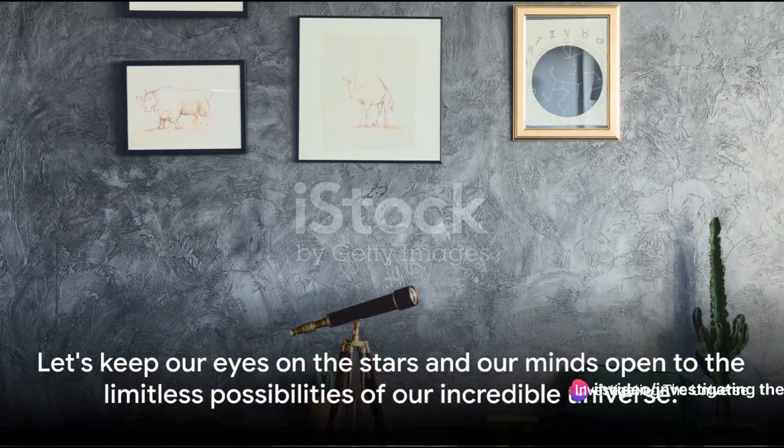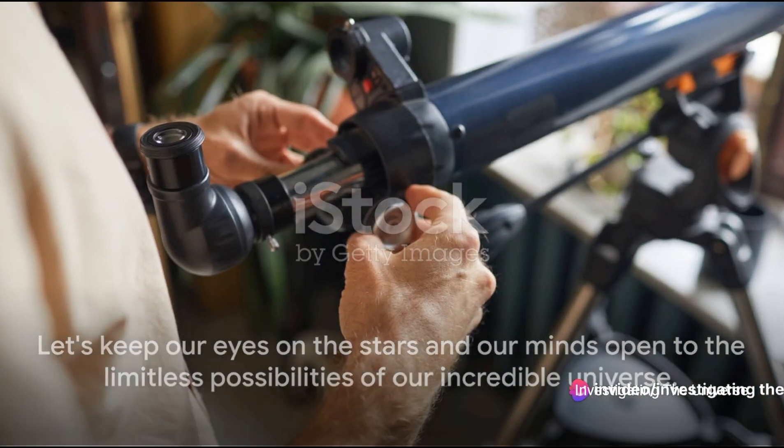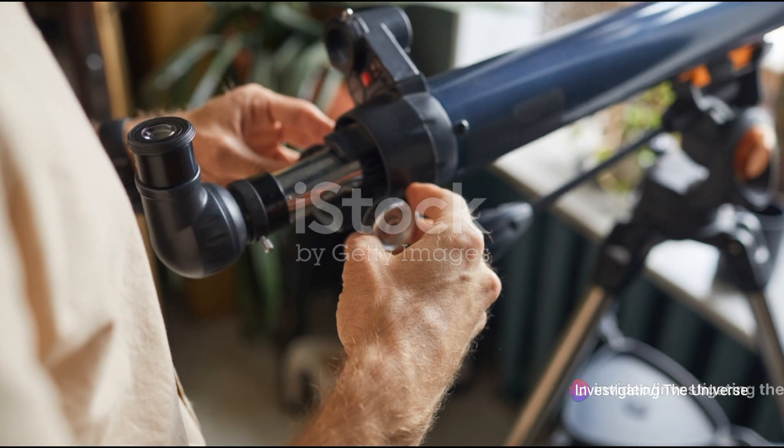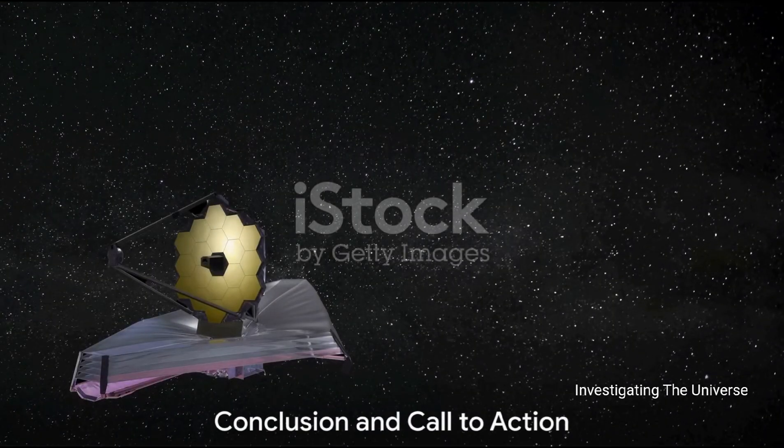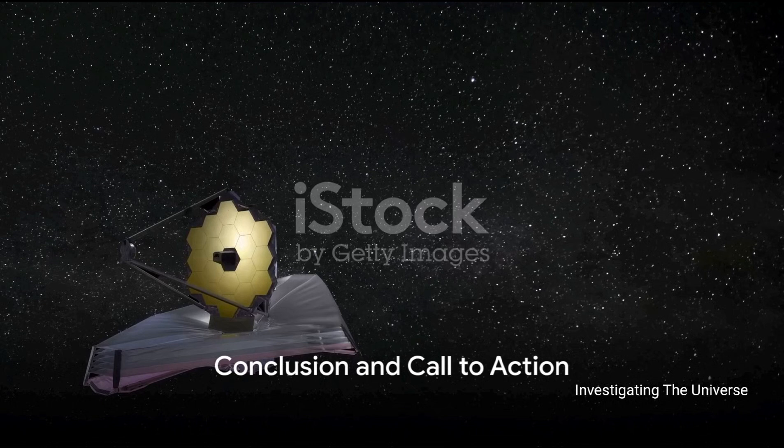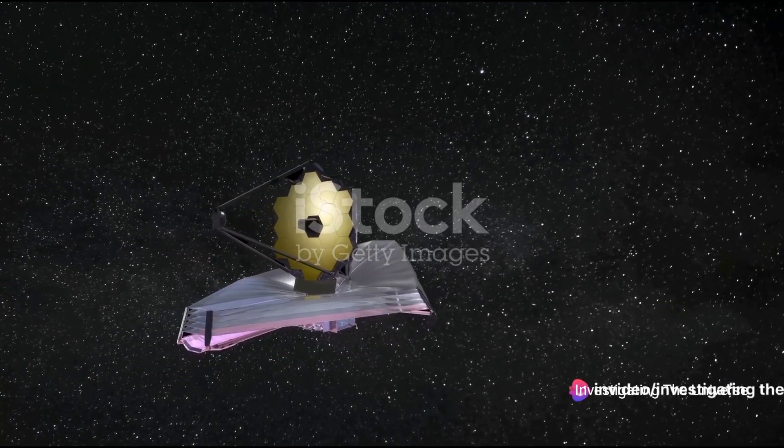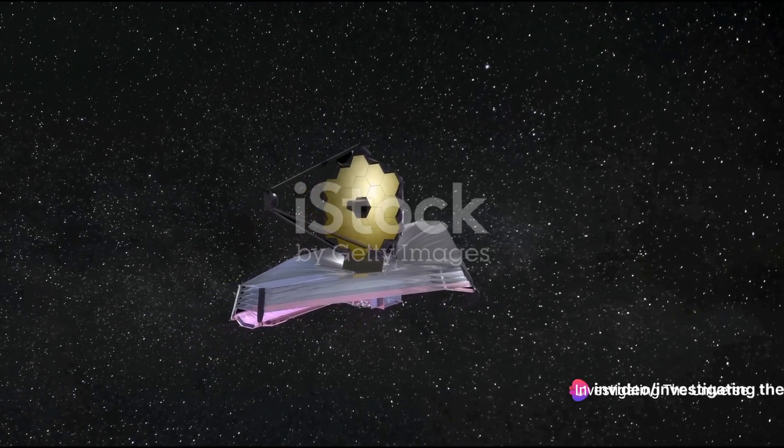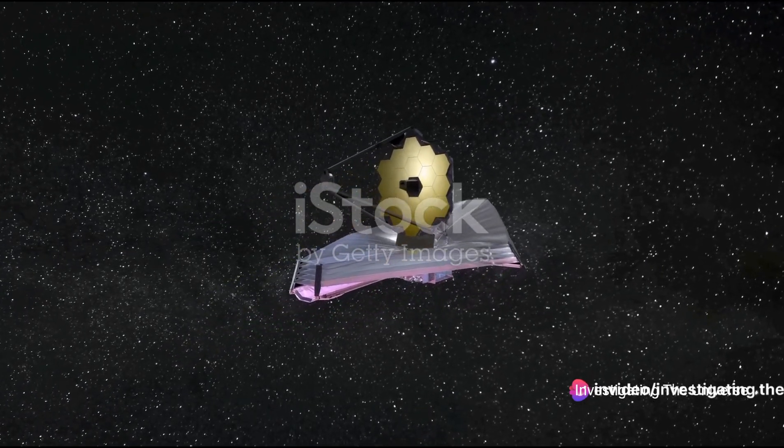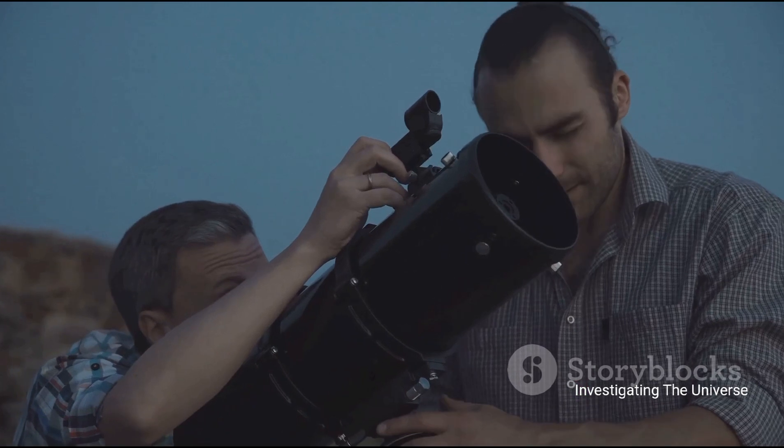So, let's keep our eyes on the stars and our minds open to the limitless possibilities of our incredible universe. These discoveries from the James Webb Space Telescope are just the beginning. This remarkable instrument has already revealed an Earth-sized exoplanet, LHS-475B, and captured images of a dusty disk around the star AU-MIKE.